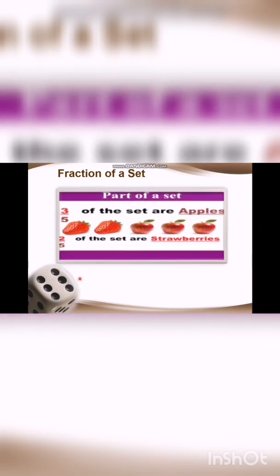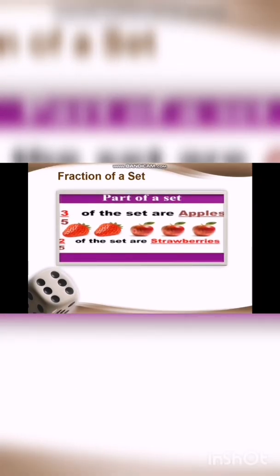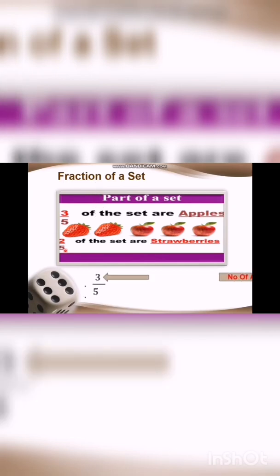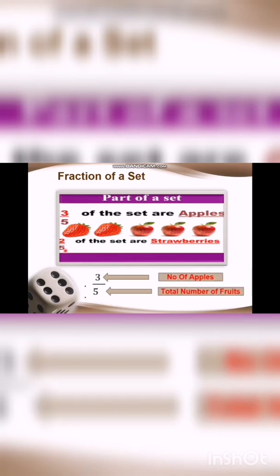I'm going to explain this topic using a figure showing parts of a set. We have five fruits: two are strawberries and three are apples. So the fraction of apples is three by five — three by five of the set are apples. The fraction of strawberries is two by five — two by five of the set are strawberries.